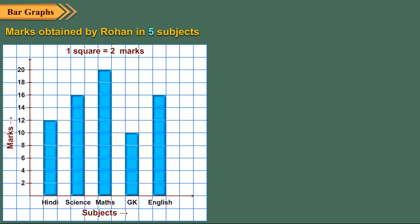A scale is also mentioned in the bar graph. Here the scale along the vertical axis is 1 square equals 2 marks. So just like a pictograph, a bar graph also helps us understand the information better and easily.